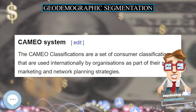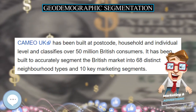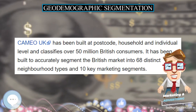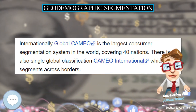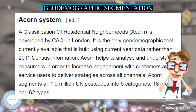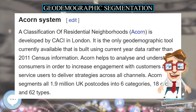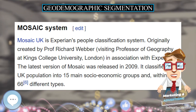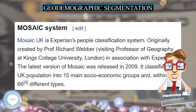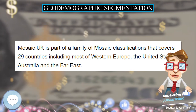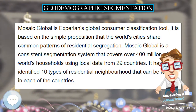Systems. Famous geodemographic segmentation systems include Claritas Prism (US), Site HD (Canada), Tapestry (US), Cameo (UK), Acorn (UK), and Mosaic (UK). New systems targeting subgroups of the population are also emerging. For example, Segmentos examines the geodemographic lifestyles of Hispanics in the United States.